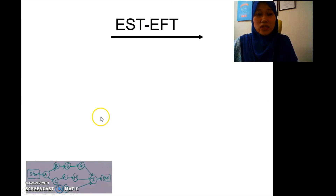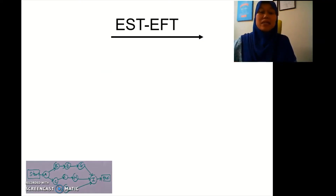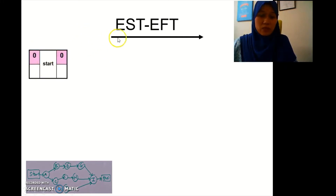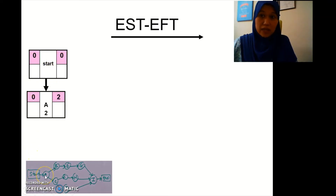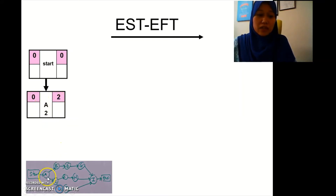When we get this sketch we need to do the network diagram, filling in the earliest start time and earliest finish time. We're going to go forward from left to right. Start is zero plus zero. Then we go to A — A's duration is two, so zero plus two is two.